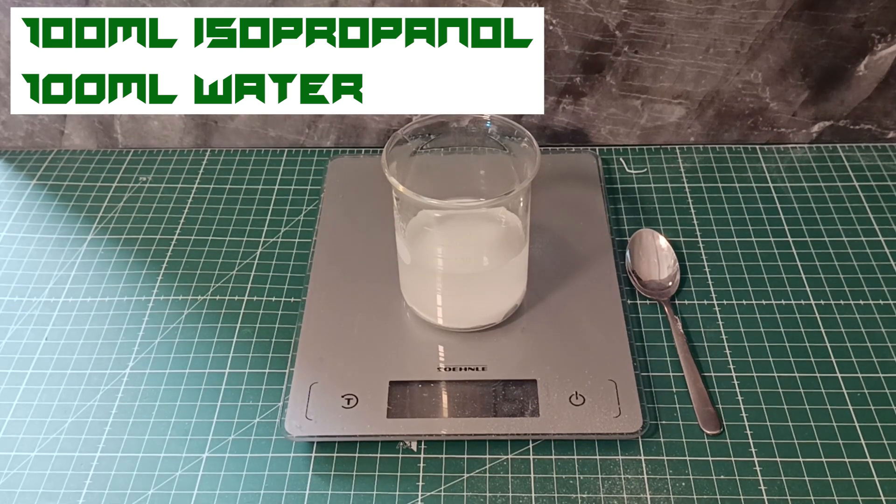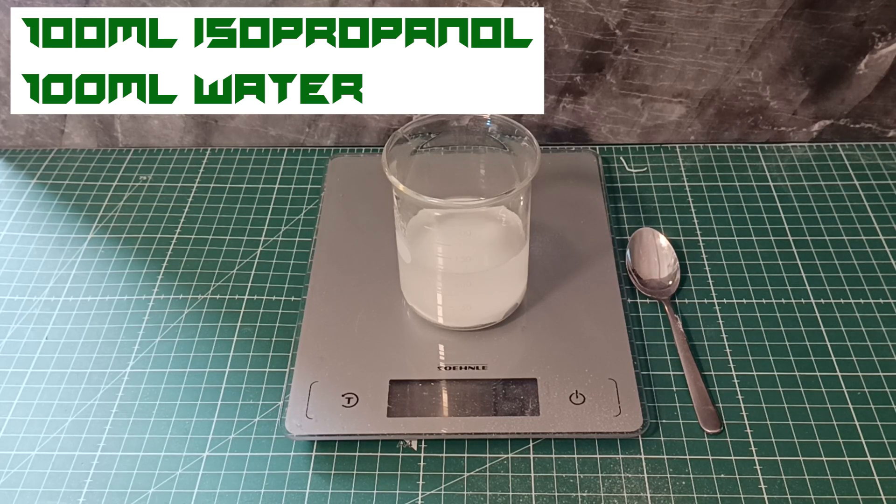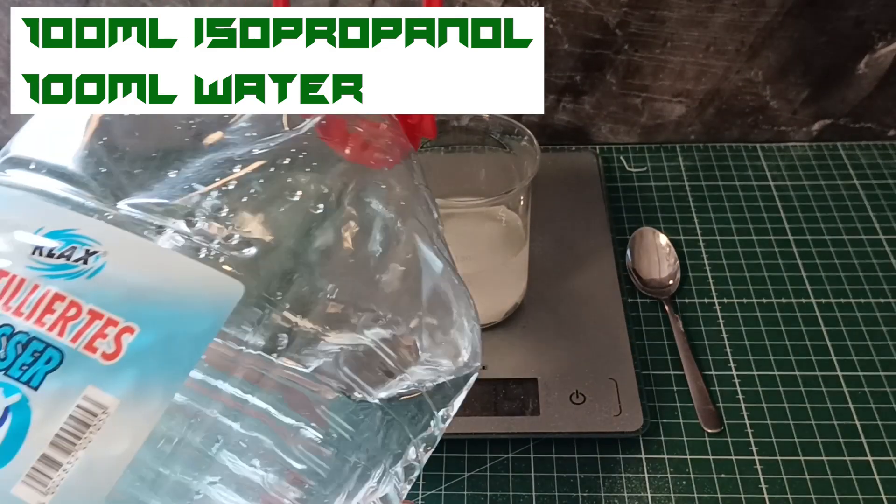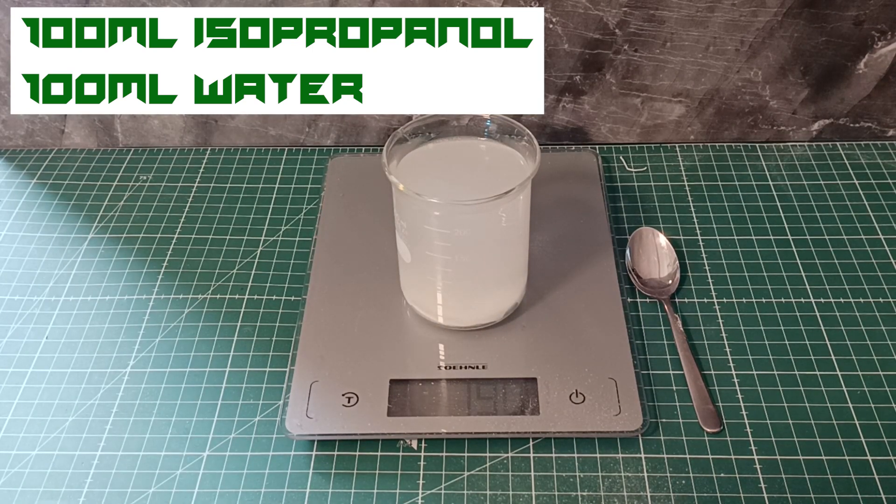Next, let's get our huge container of distilled water and pour it until we have around 200 and a bit more milliliters. It doesn't need to be exact, but it should be fairly accurate. That was a bit too much water, but we can counter it out with some isopropanol.